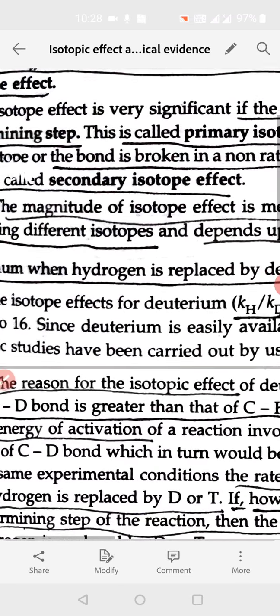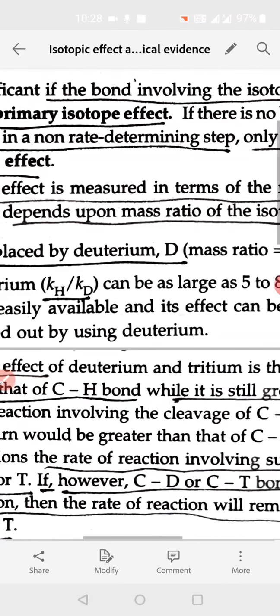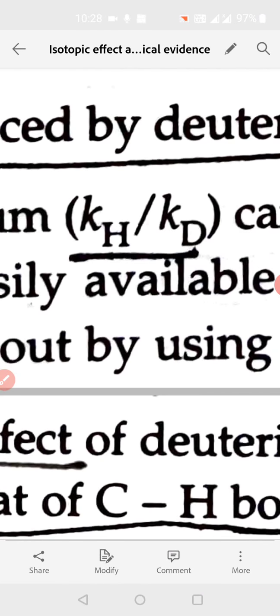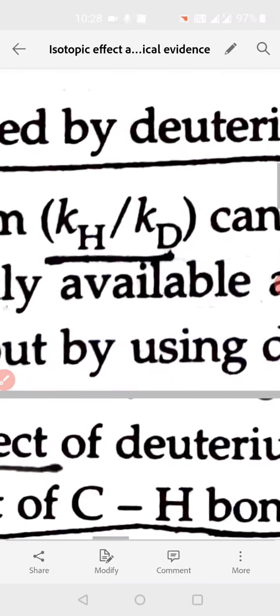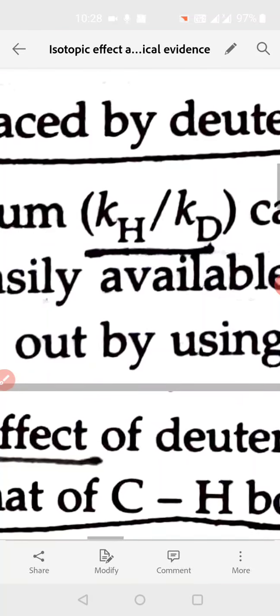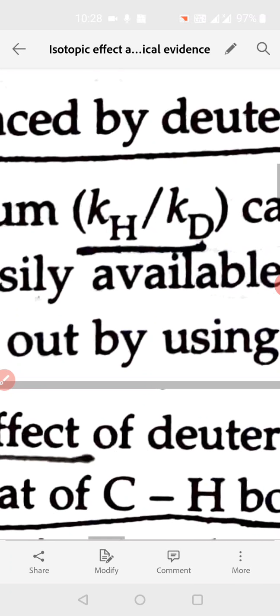The rate of reaction is measured in terms of rate constant of the reaction, so rate constant is shown as KH upon KD. It is compared to the rate of reaction when hydrogen is present in the compound and rate of reaction when deuterium is present in the compound. So this ratio experimentally has been seen that comes out to be 5 to 8.